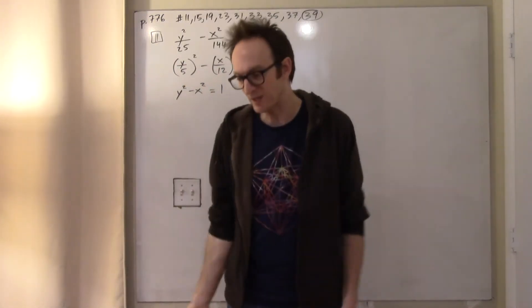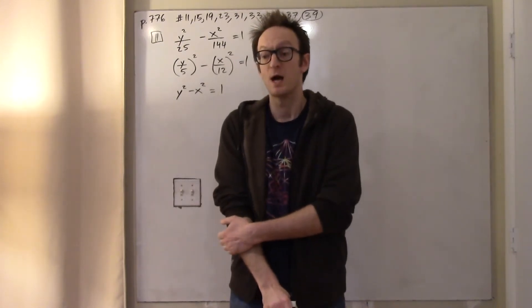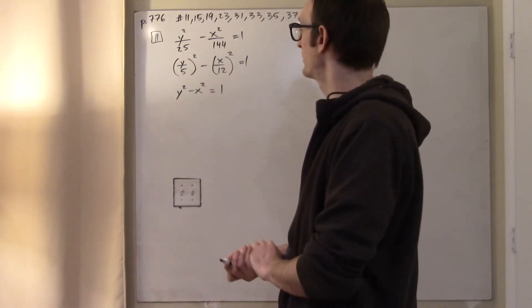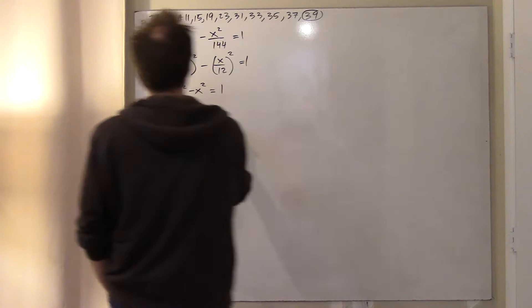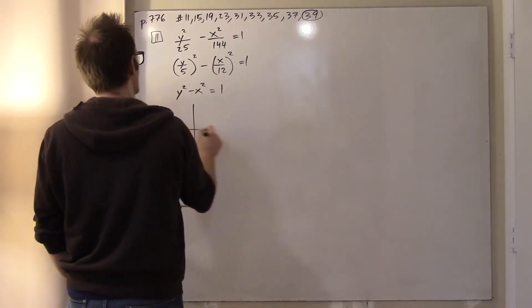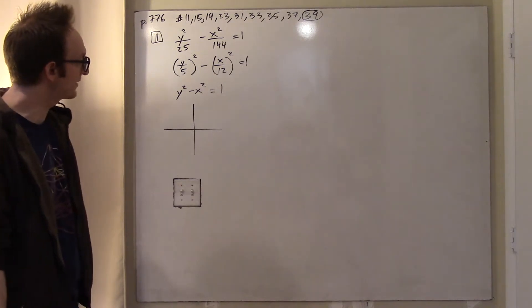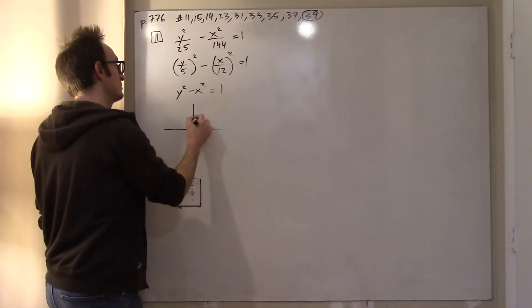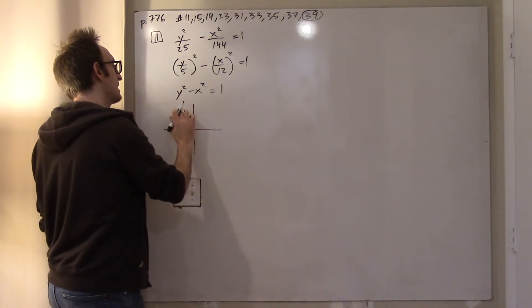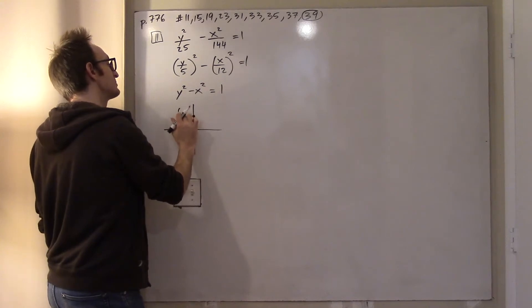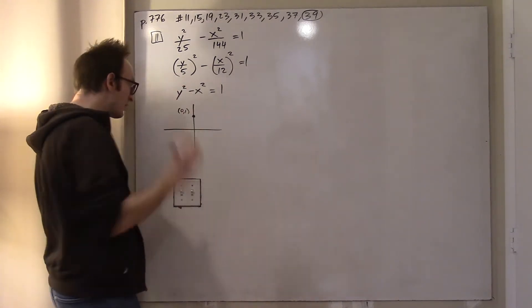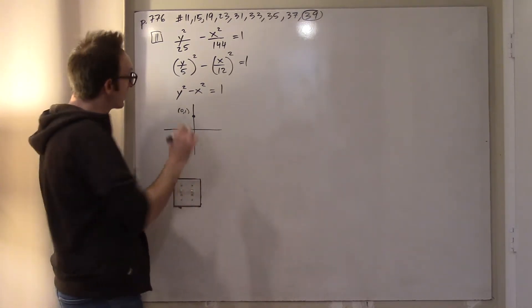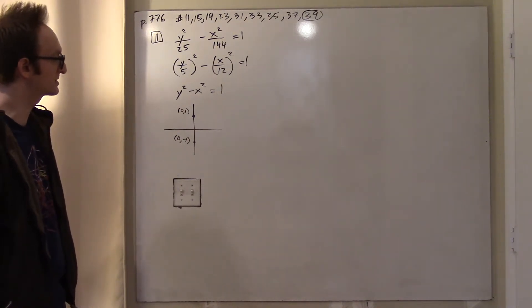This requires us to understand the y² minus x² equals 1 hyperbola. What does it look like? If y is 1, then x has to be 0, so we have the point (0, 1). And also (0, -1), because if y is negative 1, x has to be 0.